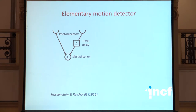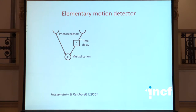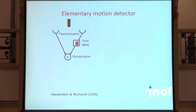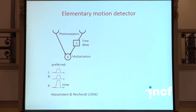A seminal contribution to how this could happen was proposed 60 years ago by Hassenstein and Reichert, who put forward a very elegant and now canonical circuit where signals from two photoreceptors pointing at adjacent but different locations in the visual field are combined nonlinearly after putting one of the signals through a time delay. Consider an object moving from right to left: it will excite the right photoreceptor before the left one, but because of the time delay, the two signals arrive at the multiplication unit at the same time, get nonlinearly enhanced, and signal leftward motion.